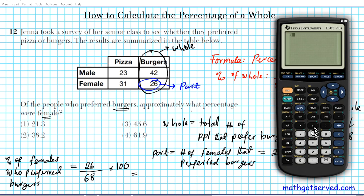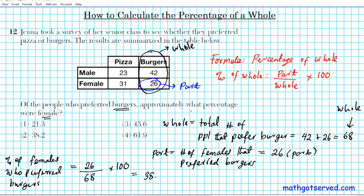We're going to compute this: 26 divided by 68 multiplied by 100. So it's 38.2352. We're rounding it to one decimal place. So it's going to be approximately 38.2%. This 38.2% represents the percentage of females who preferred burgers.